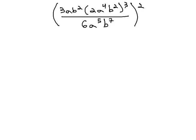In this video, we're going to simplify the expression 3ab squared times the quantity 2a to the 4th b squared cubed, all over 6a to the 5th b to the 7th, and then the entire fraction is squared.